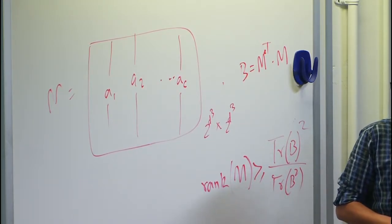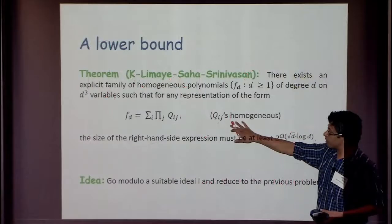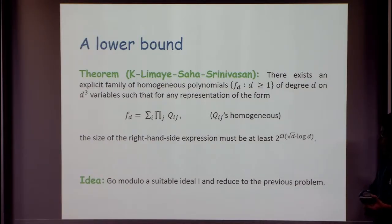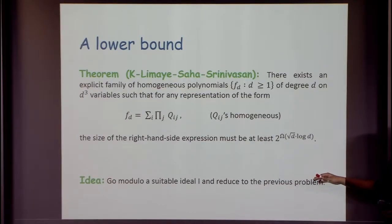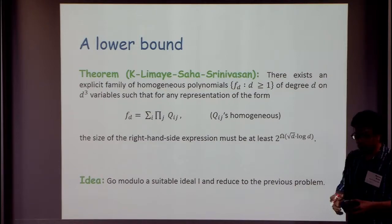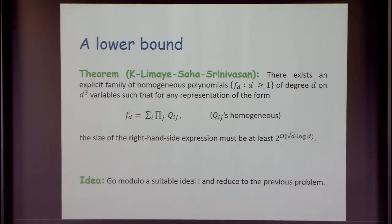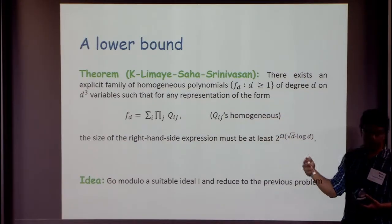One last point: I stated the theorem with q_ij's being arbitrary homogeneous polynomials, but in the proof I assumed they have low degree (square root d). To remove this assumption, the idea — suggested by Avi Wigderson and independently by my co-authors — is to do a random restriction. It turns out that viewing a random restriction as going modulo an ideal and choosing the ideal suitably lets you redo the entire proof, replacing the degree assumption on q_ij's with a sparsity condition.